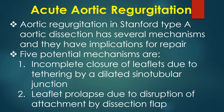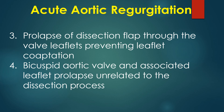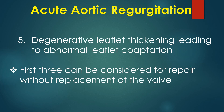Aortic regurgitation in Stanford type A aortic dissection has several mechanisms with implications for repair. Five potential mechanisms are: 1) incomplete closure of leaflets due to tethering by a dilated sinotubular junction; 2) leaflet prolapse due to disruption of attachment by the dissection flap; 3) prolapse of the dissection flap through the valve leaflets preventing leaflet coaptation; 4) bicuspid aortic valve with associated leaflet prolapse unrelated to the dissection process; and 5) degenerative leaflet thickening leading to abnormal leaflet coaptation. The first three mechanisms can be considered for repair without replacement of the valve.